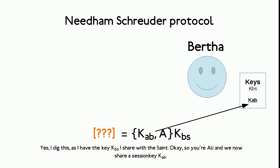He proves right to have done so, as Bertha can indeed decrypt the message. Remember that Bertha and The Saint share a secret key. Now Bertha can decipher the message, and it contains Ali's name and the session key to use. Both Ali and Bertha now have the session key.